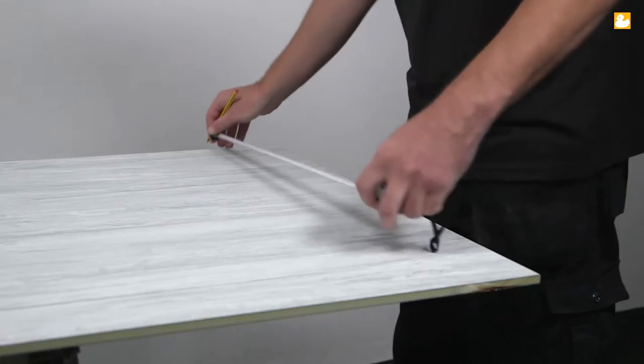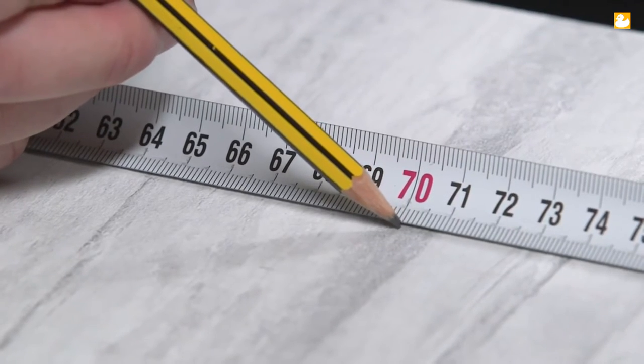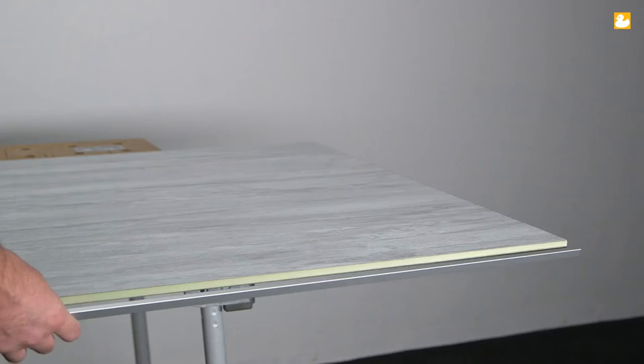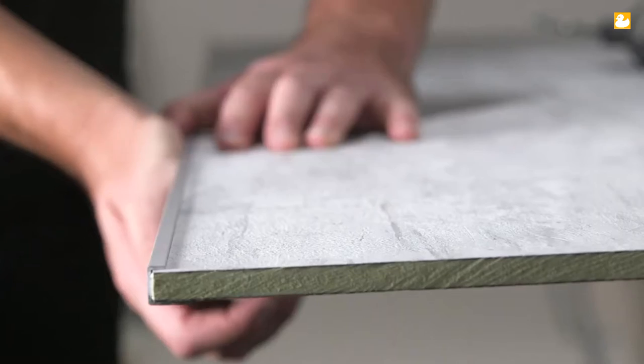Measure the width of the wall, allowing 15mm for the corner trim. Cut the width accordingly. Then fit the end cap to the panel using sealant.